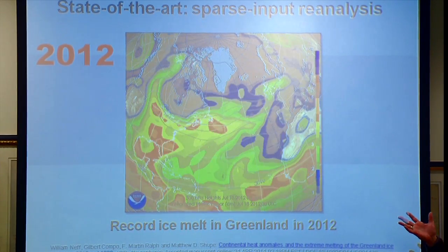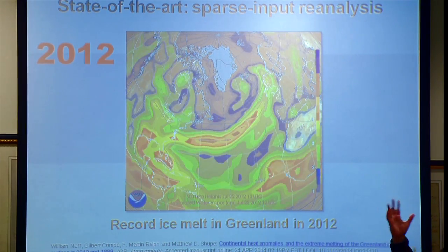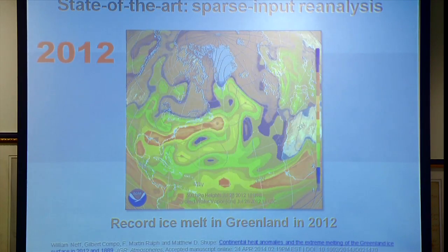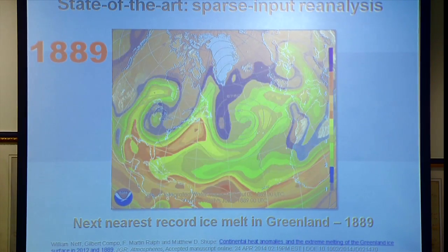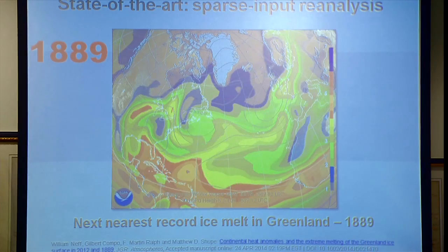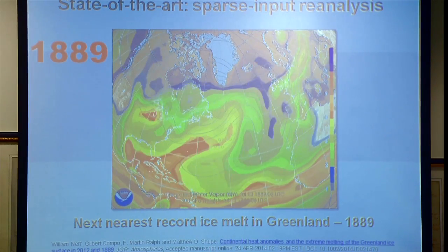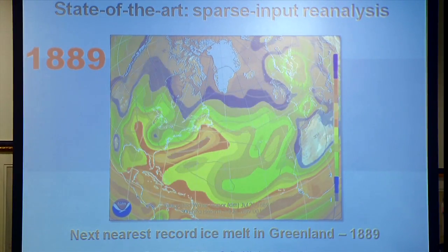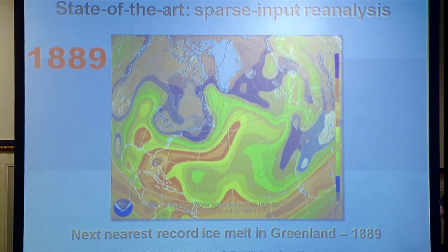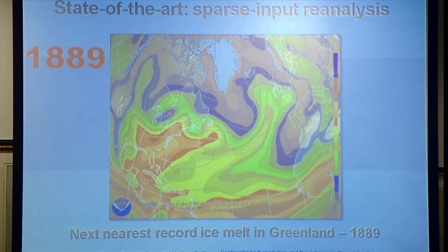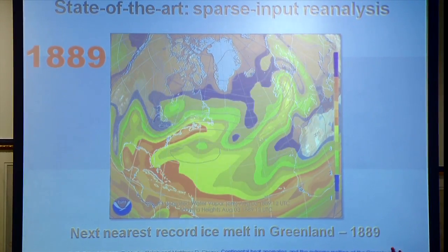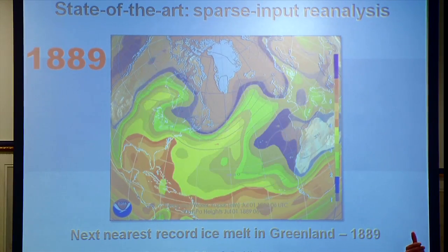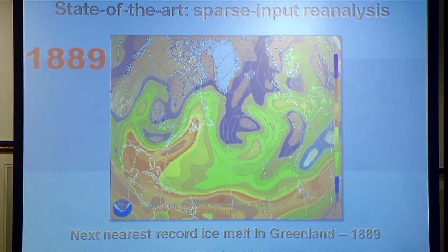This is a reanalysis that uses all the satellite data and everything we can throw at the problem, fully integrated. The same idea applies back in 1889 when there are no satellites - using surface observations and a supercomputer over at DOE, we can generate fully reconstructed depictions of the atmosphere for any six-hour period for any year as far back as we can go, which right now is about 1870. But I think 1850 is a reasonable target.